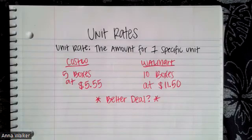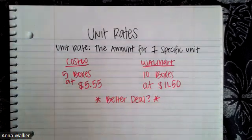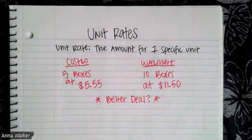In this first example we are comparing two different boxes of snacks. At Costco you can buy five boxes at $5.55. At Walmart you can buy 10 boxes and it's $11.50.